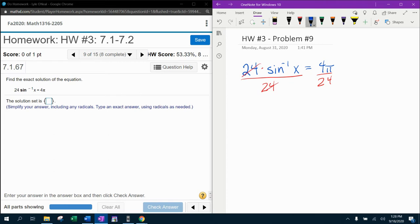And then that's going to give me the inverse sine of x equals, if I reduce this fraction, four goes into 24 six times. And so that's going to give me pi over six.